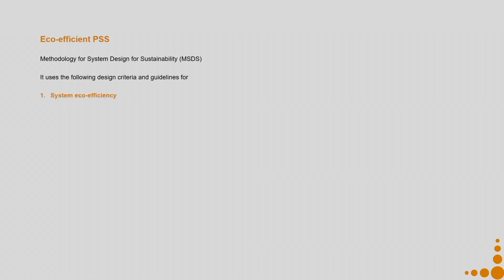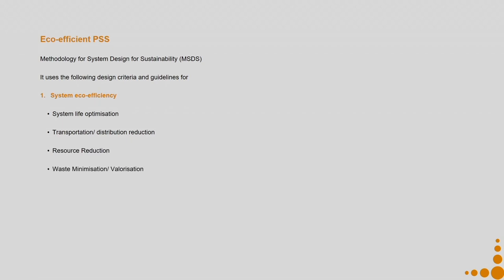There are 3 dimensions. The eco-efficient PSS talks about system eco-efficiency: system life optimization, transportation or distribution reduction, resource reduction, waste minimization and valorization, conservation or biocompatibility, and toxicity reduction. You can set different priority levels to each of these sub-dimensions.